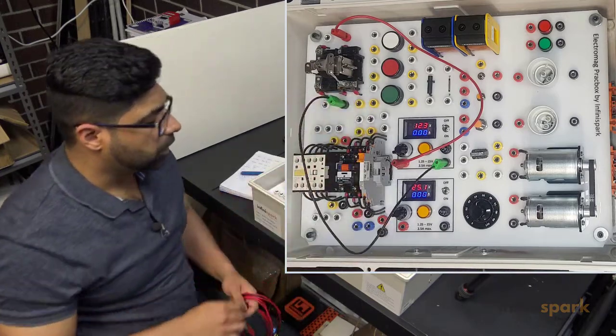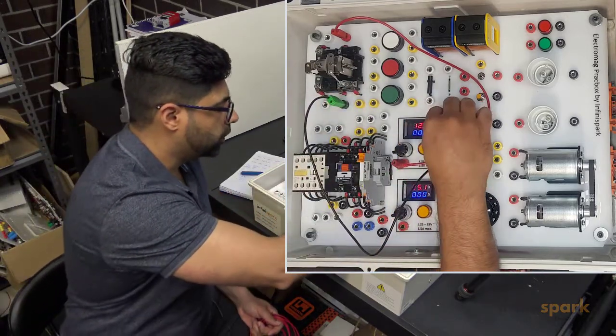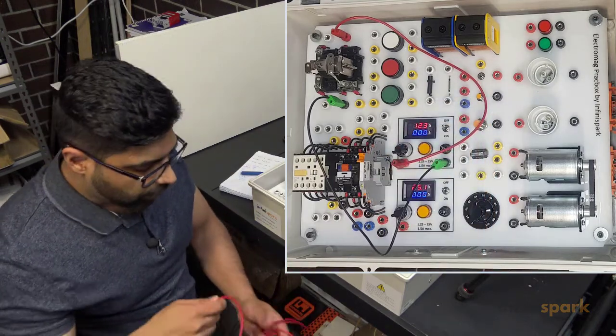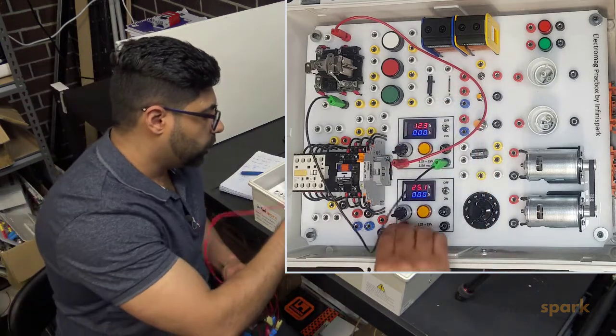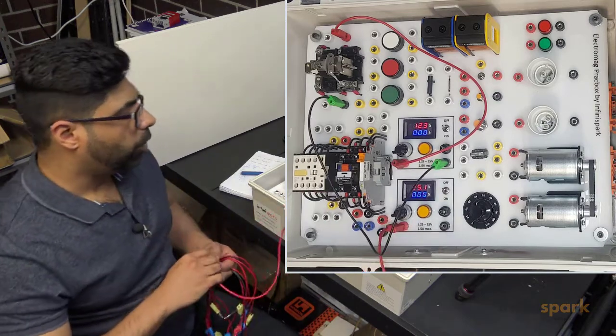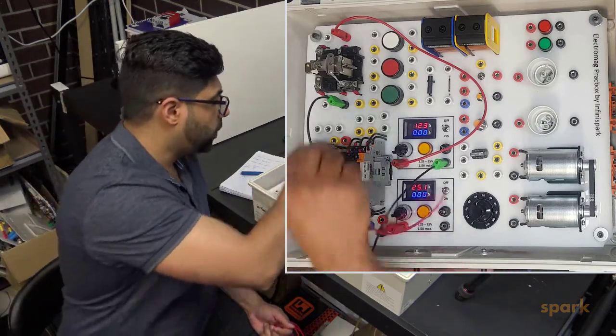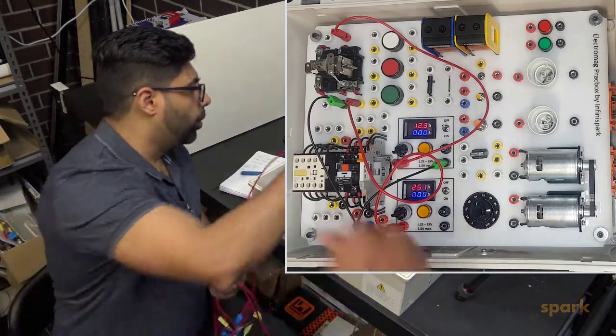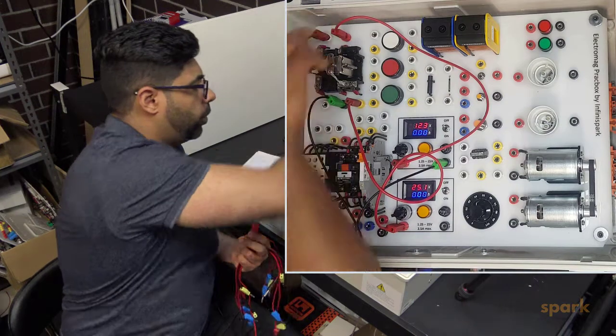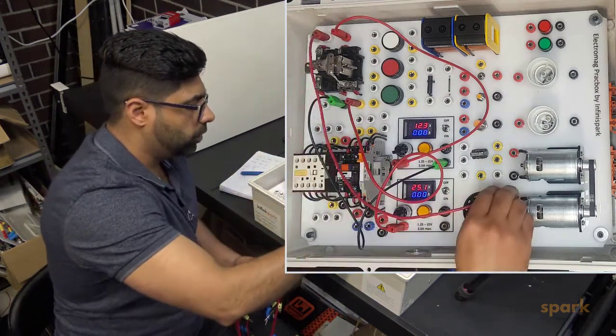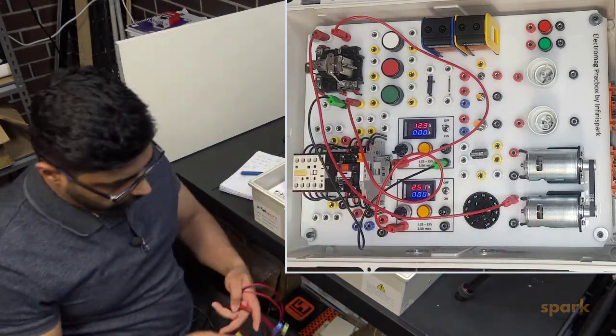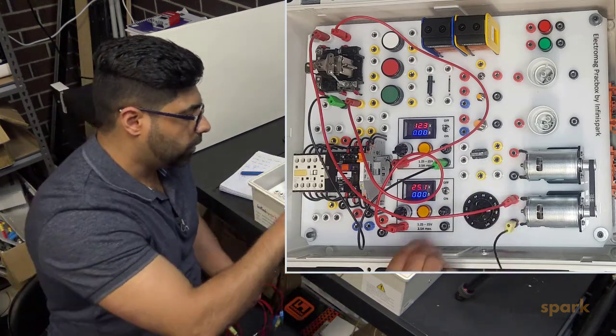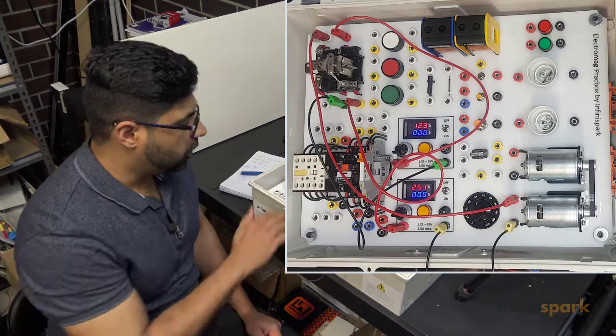This is my control circuit. So if I turn this on, the relay turns on. Let's connect the load. I'm going to connect the positive of my second power supply to the common and normally open side of my relay to the motor, and the negative of the motor to the power supply. So this is my power circuit.